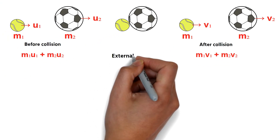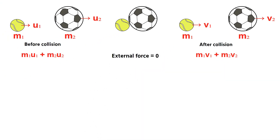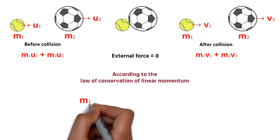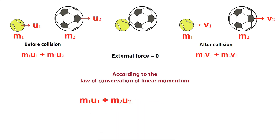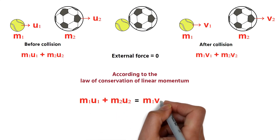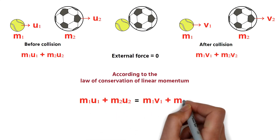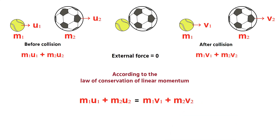If there is no external force acting on the balls — that is, only interaction takes place — then according to the Law of Conservation of Linear Momentum, M1U1 plus M2U2 is equal to M1V1 plus M2V2.